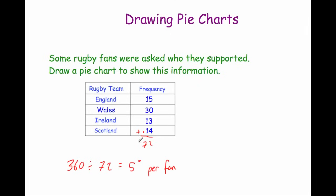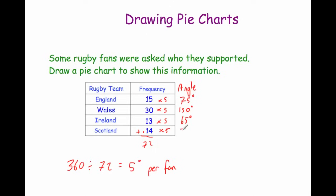Now we know each fan gets 5 degrees, so we're going to multiply each frequency by 5 to find the angle for each sector. England: 15 times 5 is 75 degrees. Wales: 30 times 5 is 150 degrees. Ireland: 13 times 5 is 65 degrees. Scotland: 14 times 5 is 70 degrees.